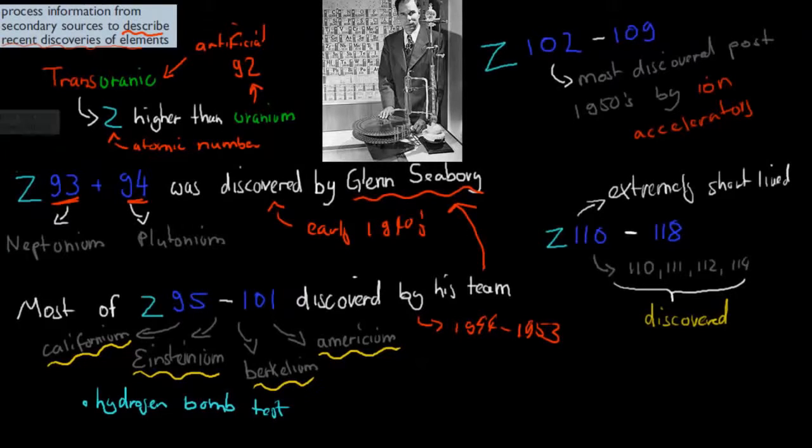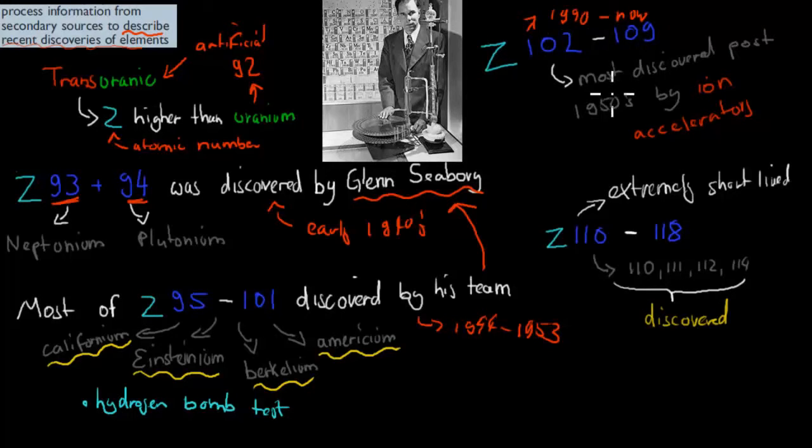Now, recently, this would have been maybe most of these would have been discovered between 1990 and now. And these are, so most of these are post-1950s, and specifically the 1990s to now. And these are atomic numbers of 102 to 109. And the reason why most of them are discovered now is because we need to have an ion accelerator.